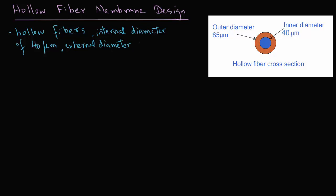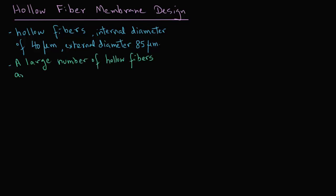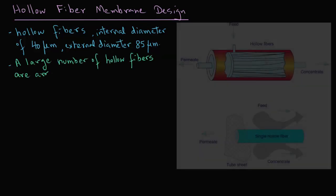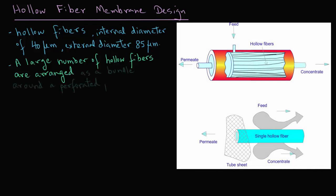The external diameter is 85 micrometers. We take a large number of these hollow fibers and arrange them as a bundle around a perforated pipe as we see here in this diagram.